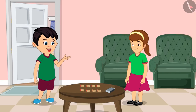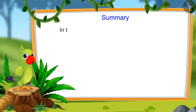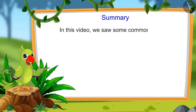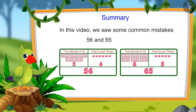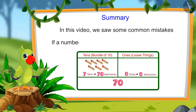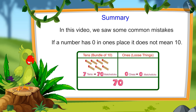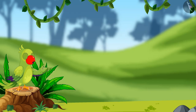Chotu says: Now I have understood, thank you Arti. So children, that is all for today. In this video we saw some common mistakes that we should avoid — for instance, 56 and 65 are not equal, and if a number has zero in the ones place it does not mean 10. I sincerely hope that you have understood this topic. Bye friends!